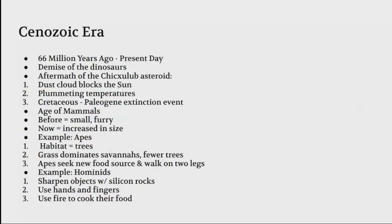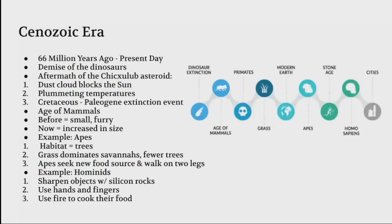The Cenozoic era was 66 million years ago to present day. This is the demise of the dinosaurs because of the Chicxulub asteroid. The aftermath of this asteroid: first, dust clouds blocked the sun, and because it blocks the sun, temperatures plummeted. This created the Cretaceous-Paleogene extinction event.